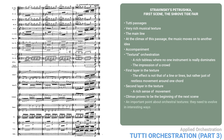This brings up an interesting point about orchestral textures. They need to evolve in interesting ways, and one of the best ways to achieve this is with a formal progression, as we see here. First, the theme in the bass moves up into the flutes and so on, then it culminates in a crescendo.